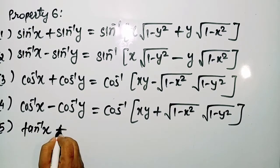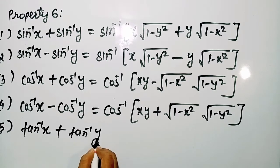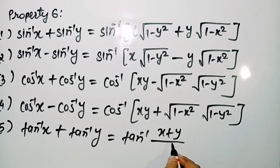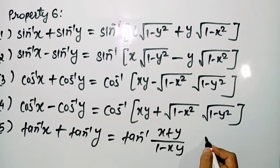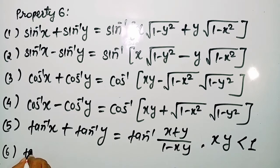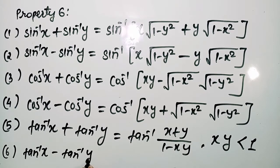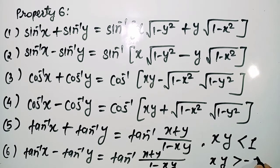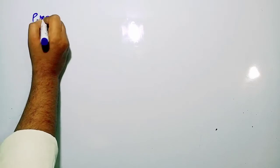Fifth, tan⁻¹ x + tan⁻¹ y = tan⁻¹((x + y)/(1 − xy)), if xy < 1. Sixth, tan⁻¹ x − tan⁻¹ y = tan⁻¹((x − y)/(1 + xy)), if xy > −1.